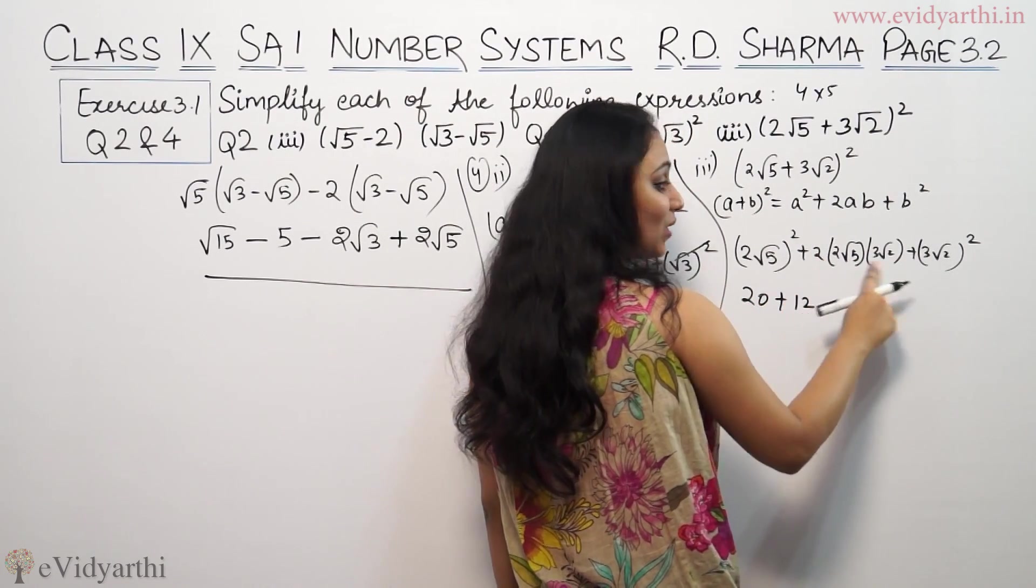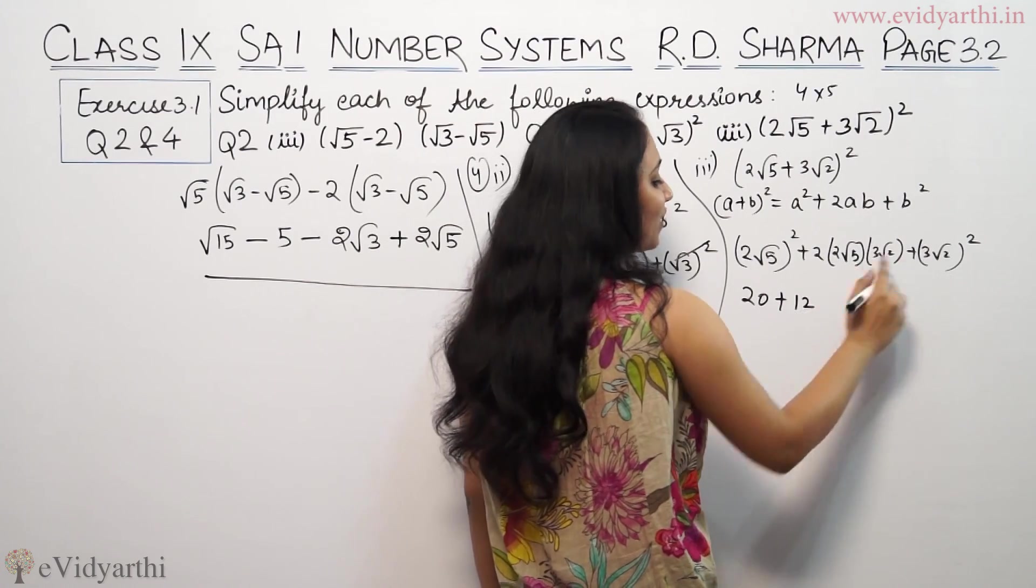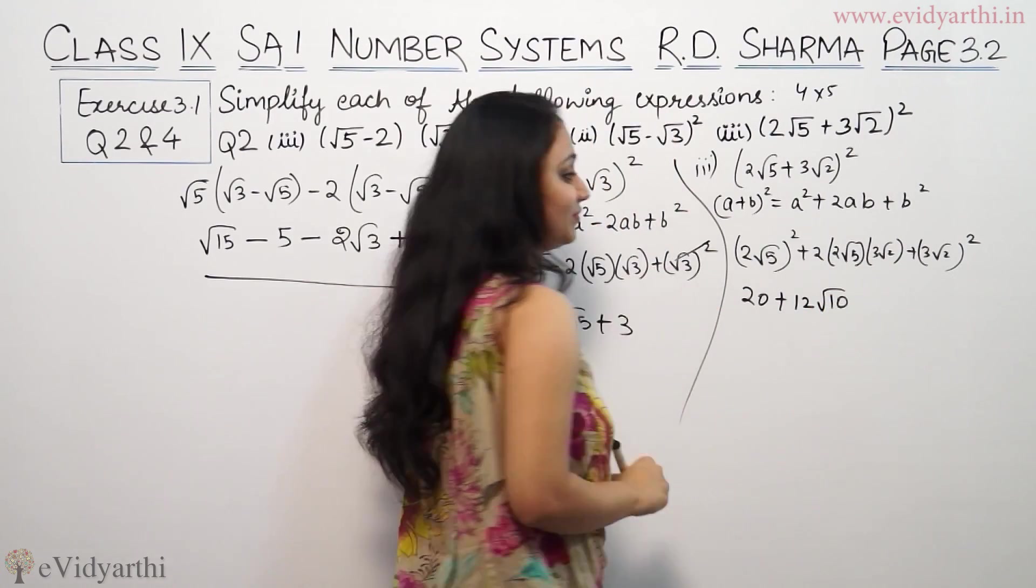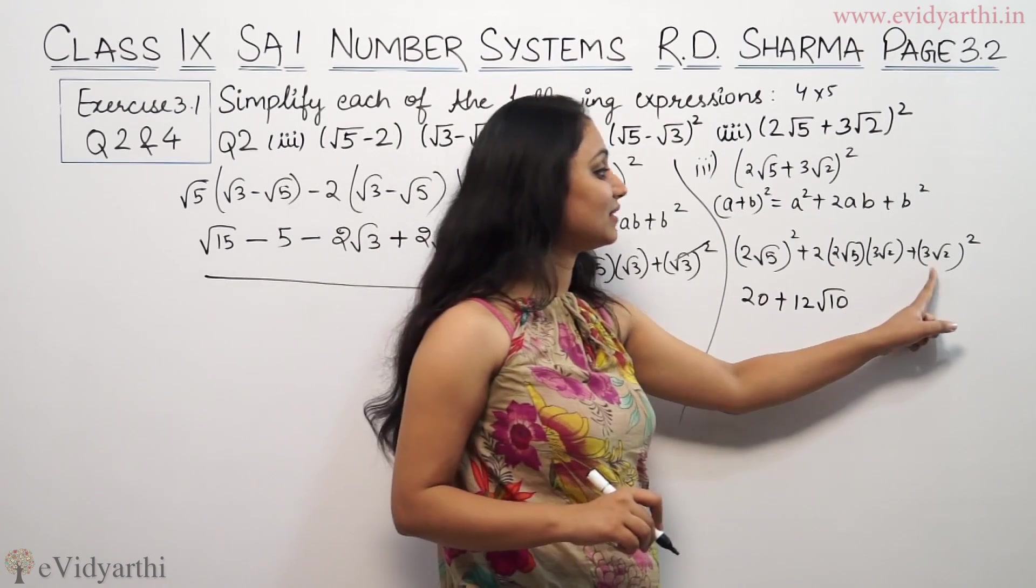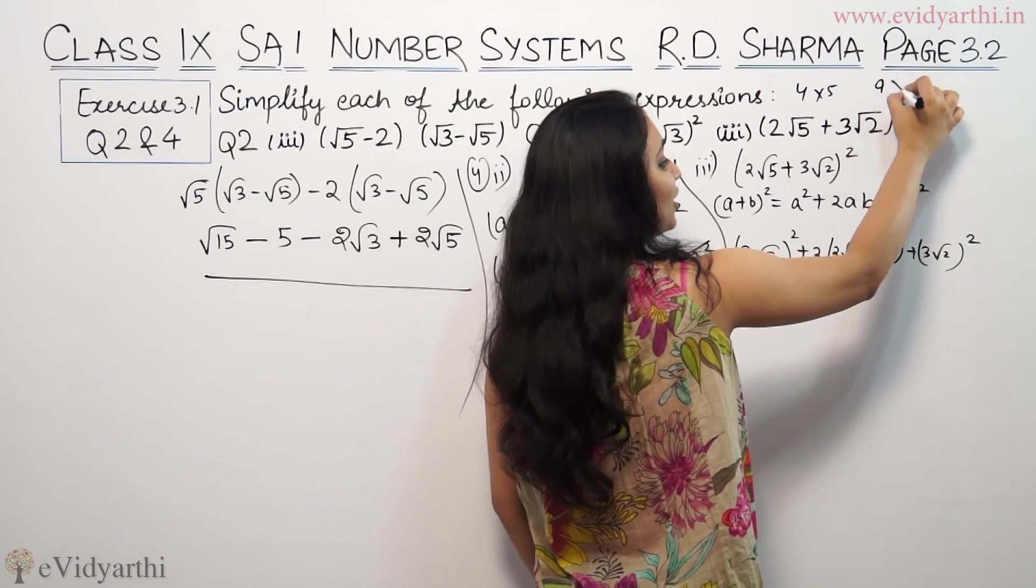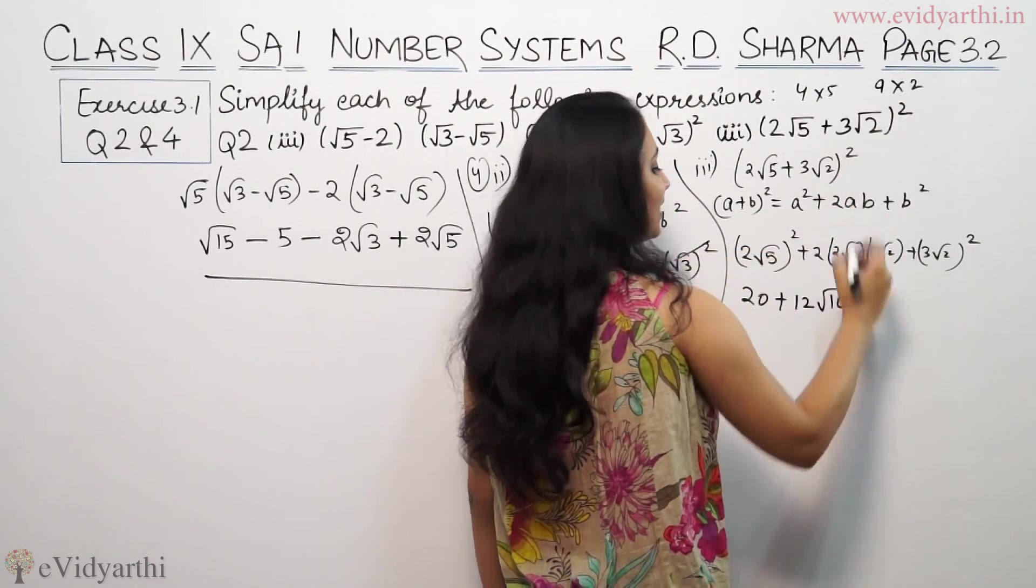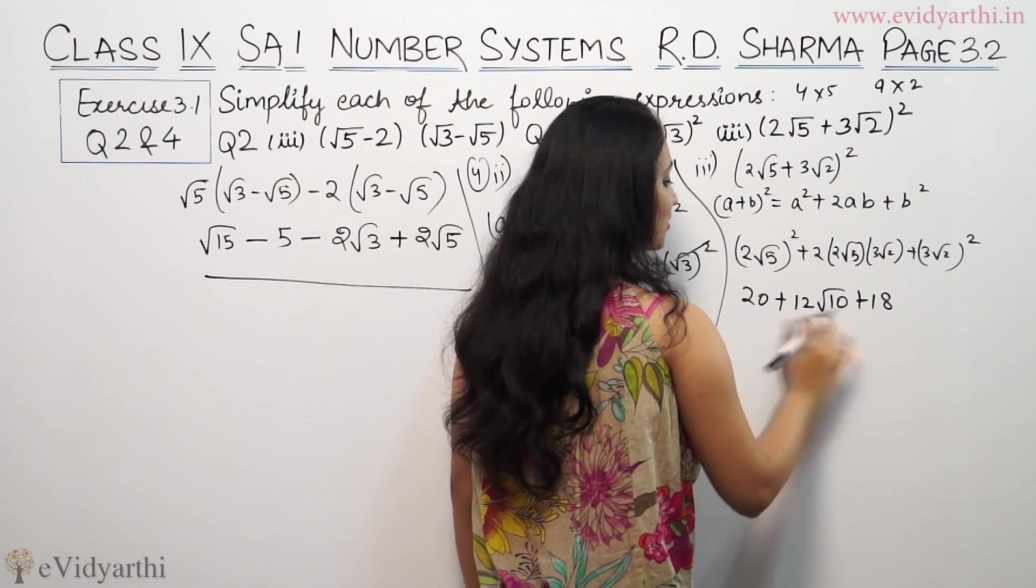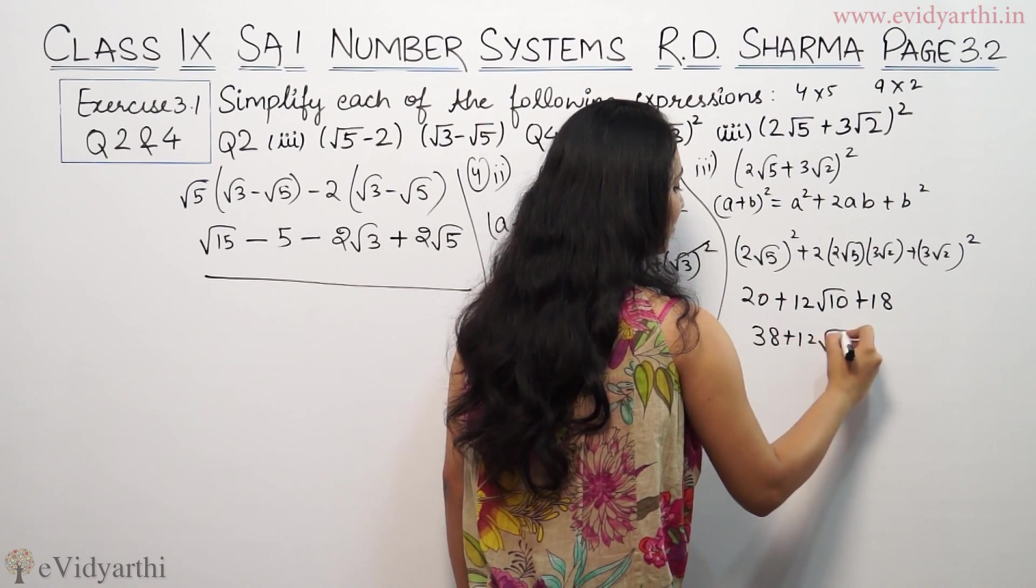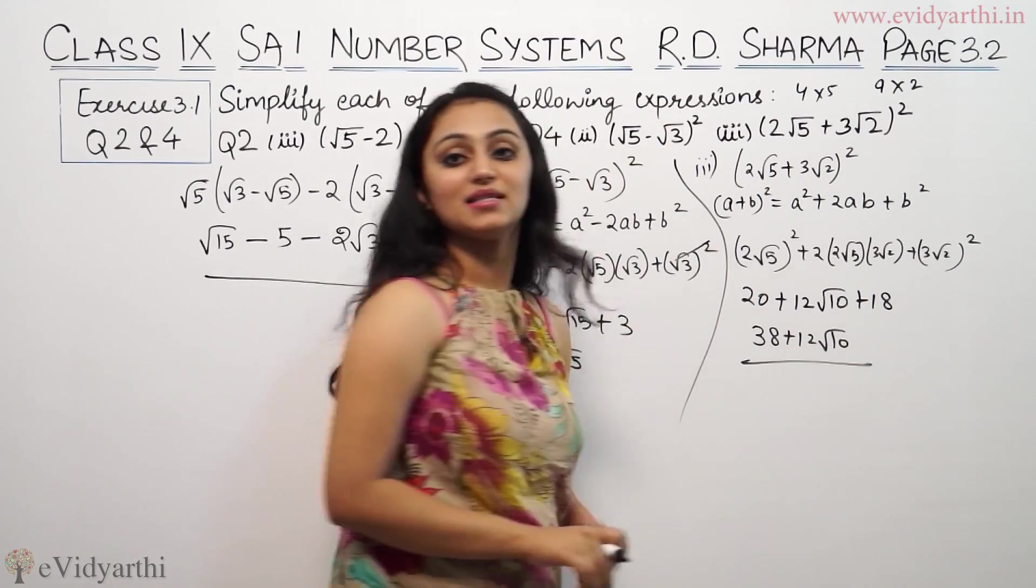√5 times √2 is √10. So we have (3√2)², 3² is 9, (√2)² is 2, so 9 times 2 is 18. 20 plus 18 is 38 plus 12√10. So this is the answer.